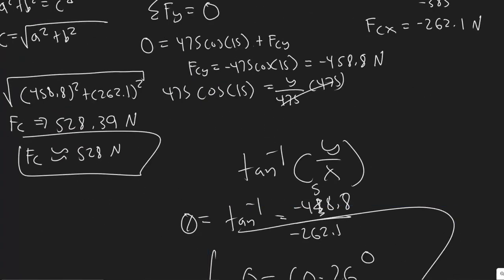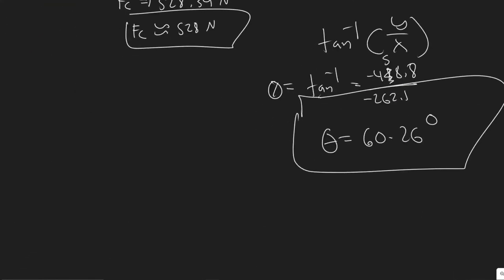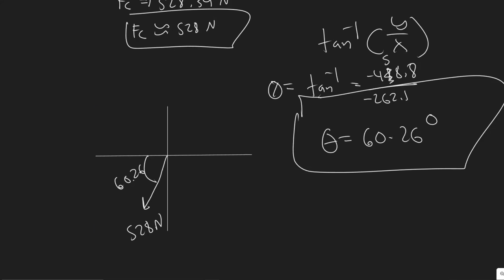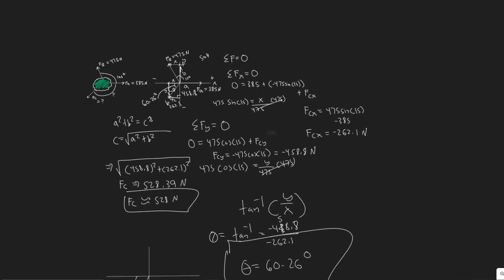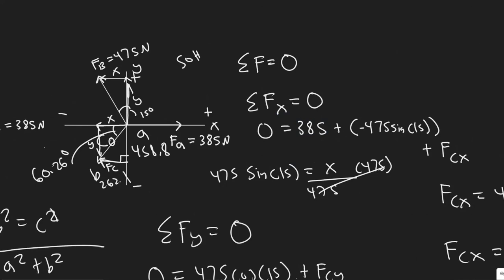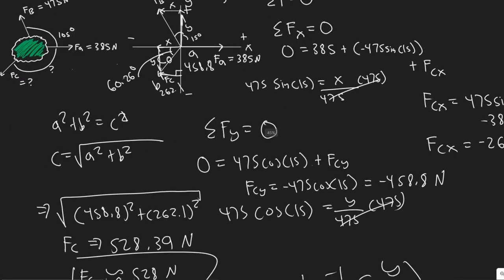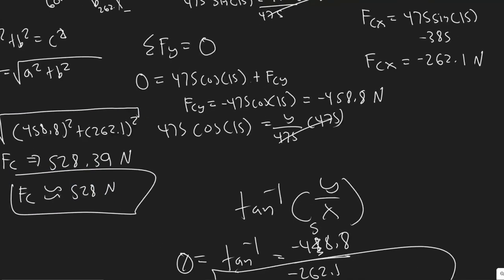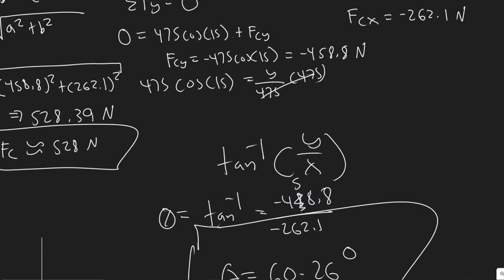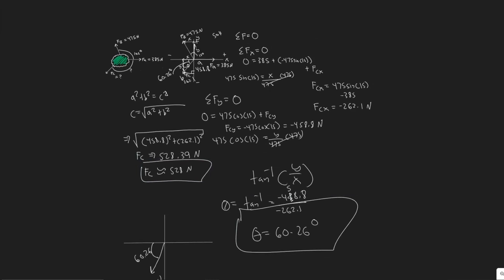So your answers are: magnitude FC equals 528 newtons, direction theta equals 60.26 degrees below the x-axis. Quick rundown: draw the forces on a graph, sum forces in x and y since they equal zero because it's not moving, solve for x and y components, combine using the magnitude formula, and take the arctangent of y over x to get the direction. Hopefully you found this video useful.